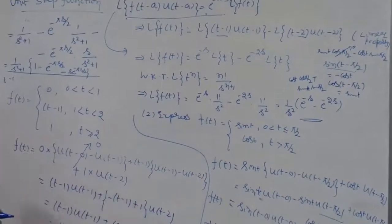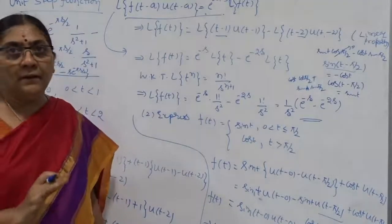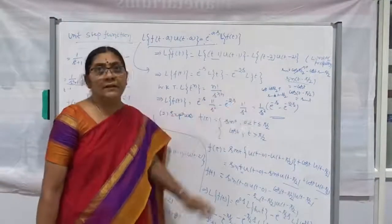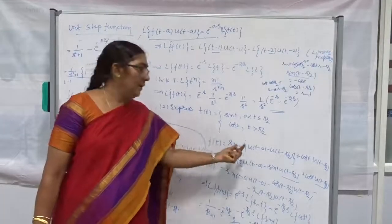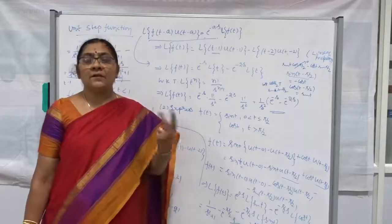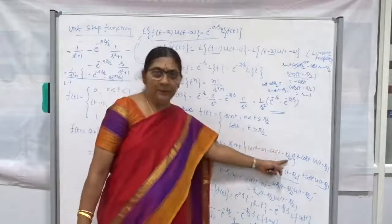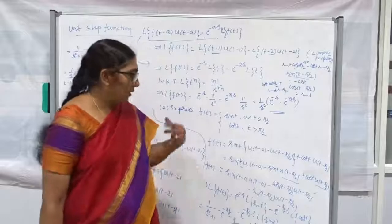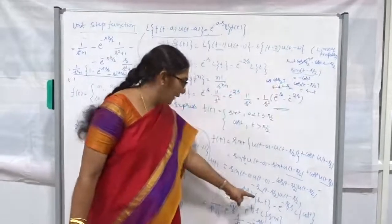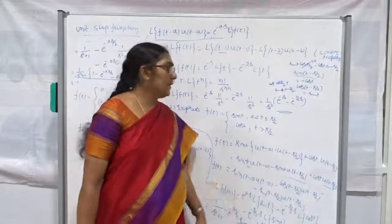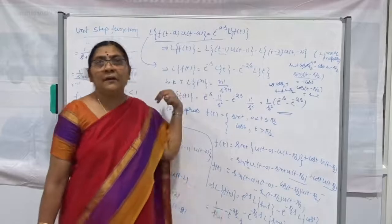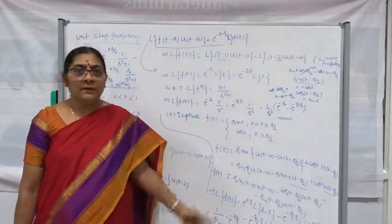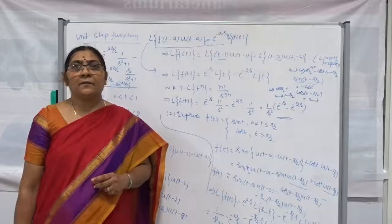This is the solution. This is one of the tricky problems — you may feel it is easy, but keep in mind: whenever you express the given function in terms of the Heaviside unit step function and it involves a trigonometric function, you must write carefully. You cannot group the terms. Thank you very much for listening. If you feel comfortable with my videos, please click the like button and subscribe to my channel. Thank you very much.